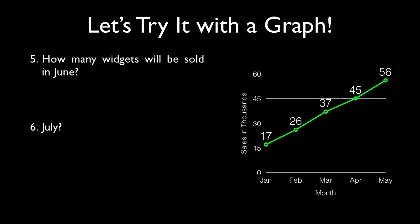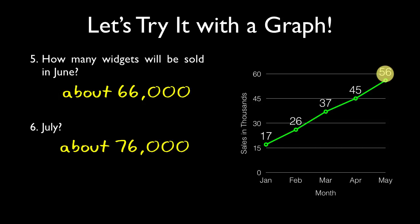We also do this with graphs quite frequently. You'll notice here in this graph, the company is selling widgets. And you'll notice that in January, they started off at 17,000. Then the next month, they sold about 9,000 more, then 11,000 more, then 8,000 more, then another 11,000 more. So if you look at that, they're selling roughly about 10,000 more widgets each month, which tells us that in June, they should sell about 66,000, and in July, about 76,000.